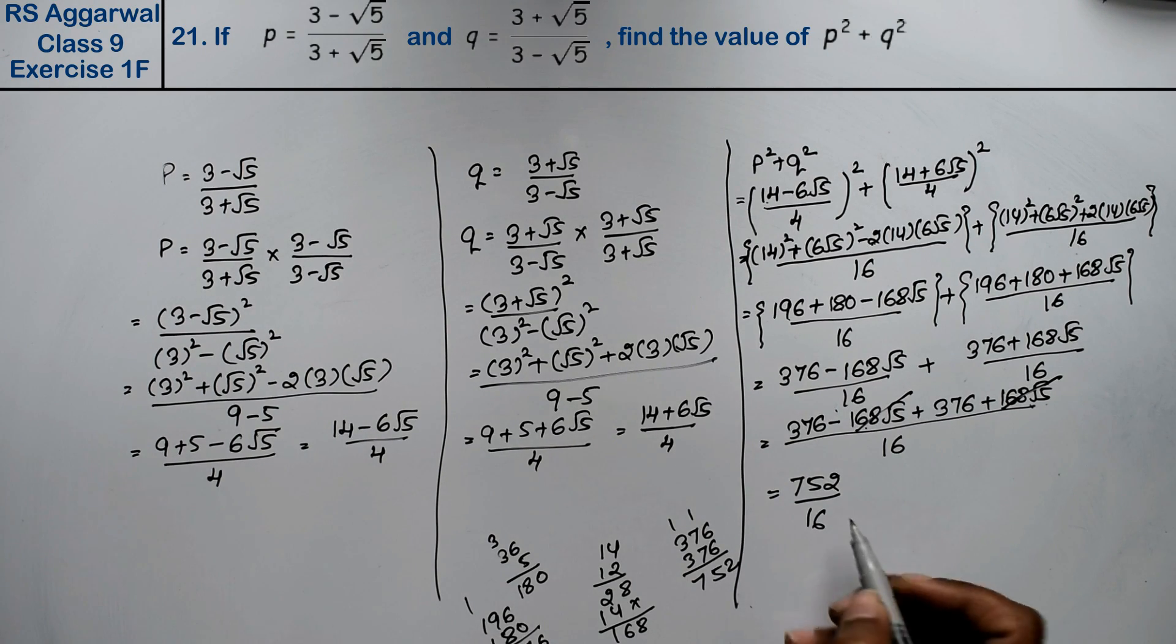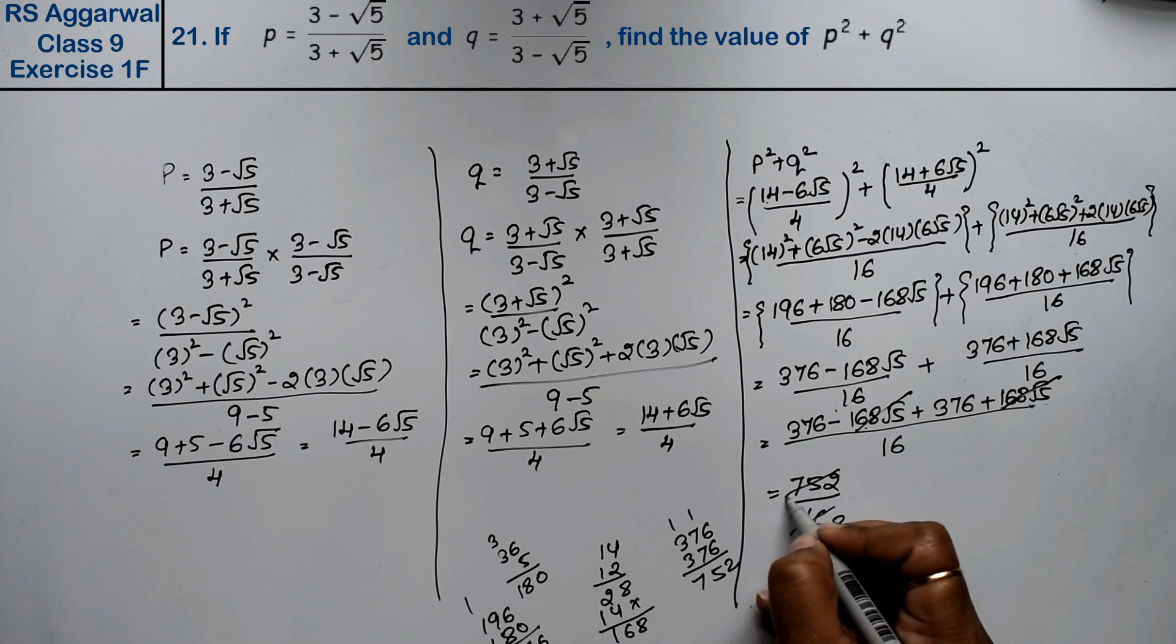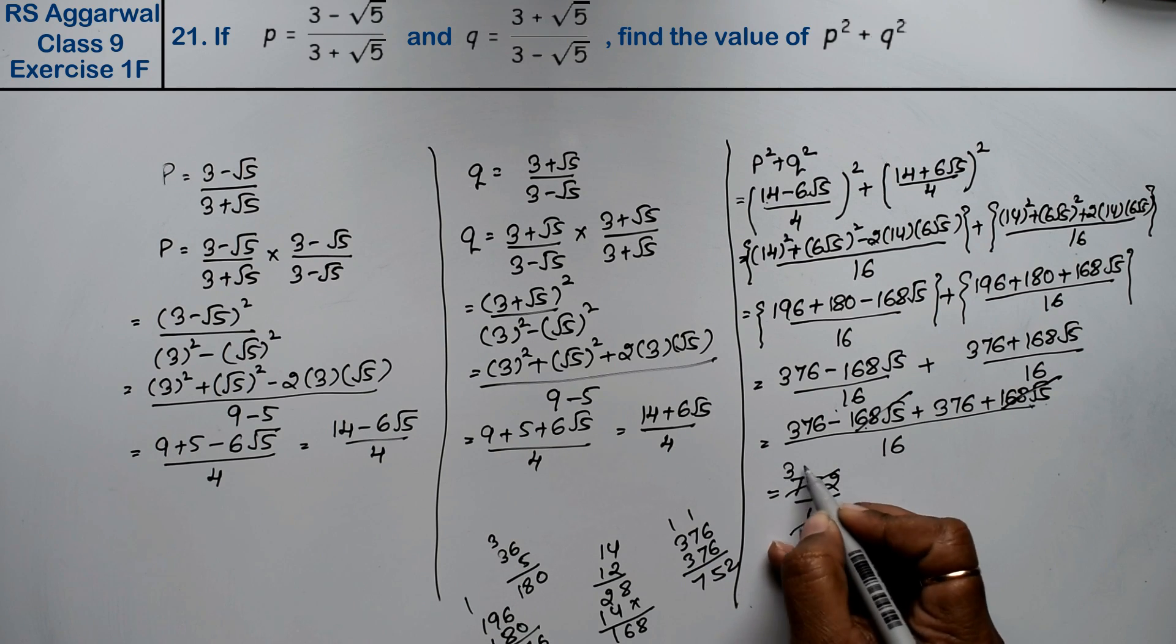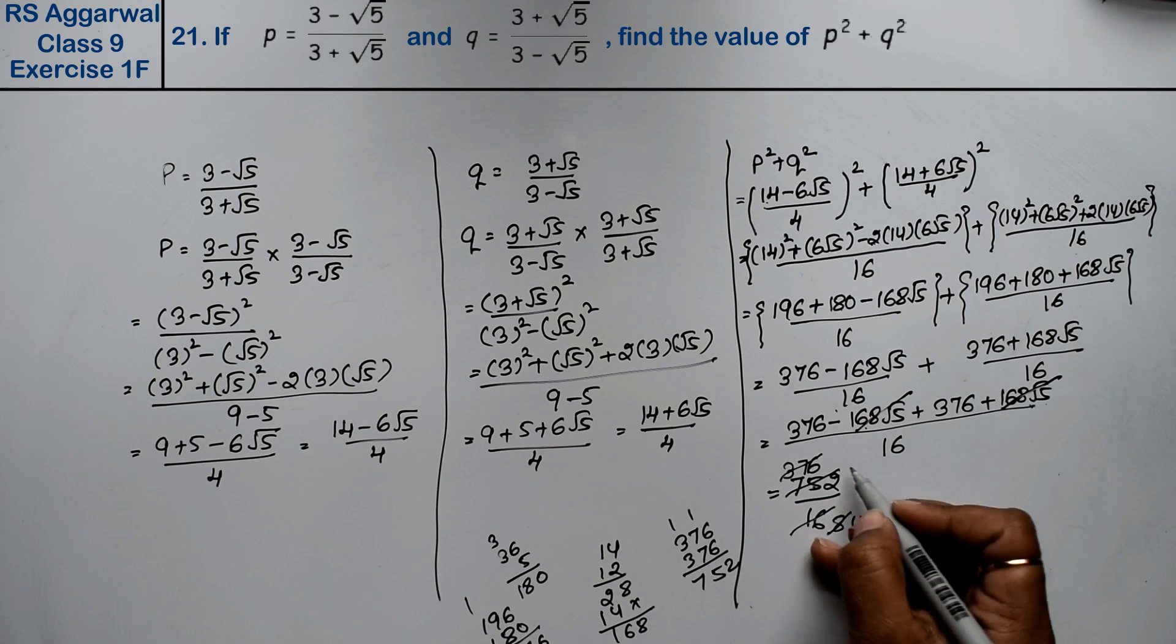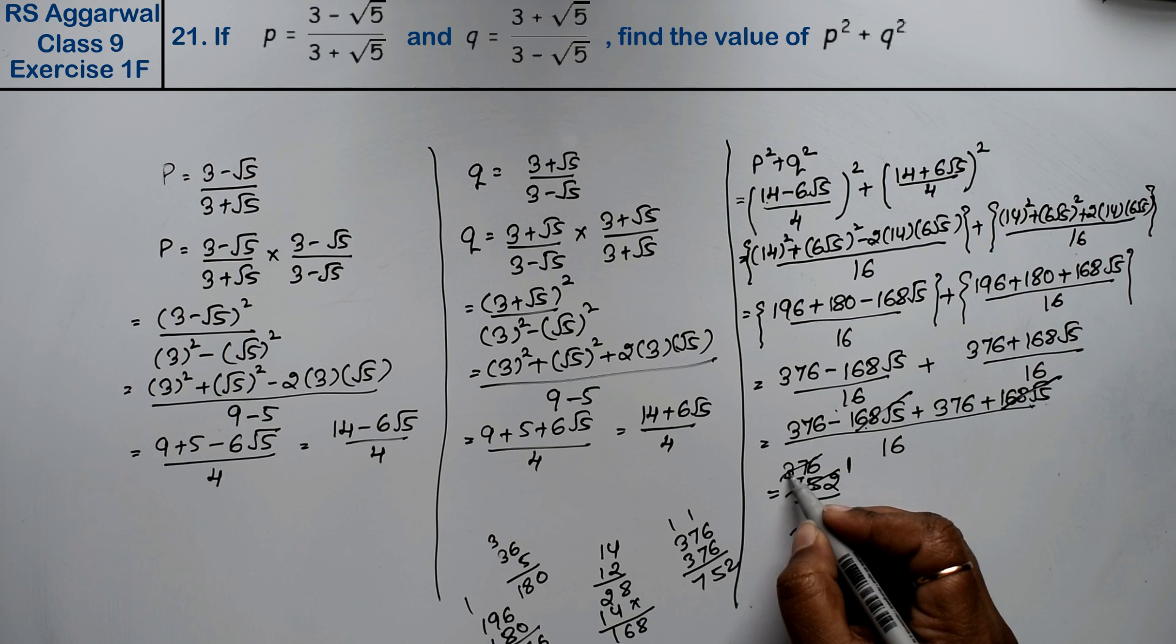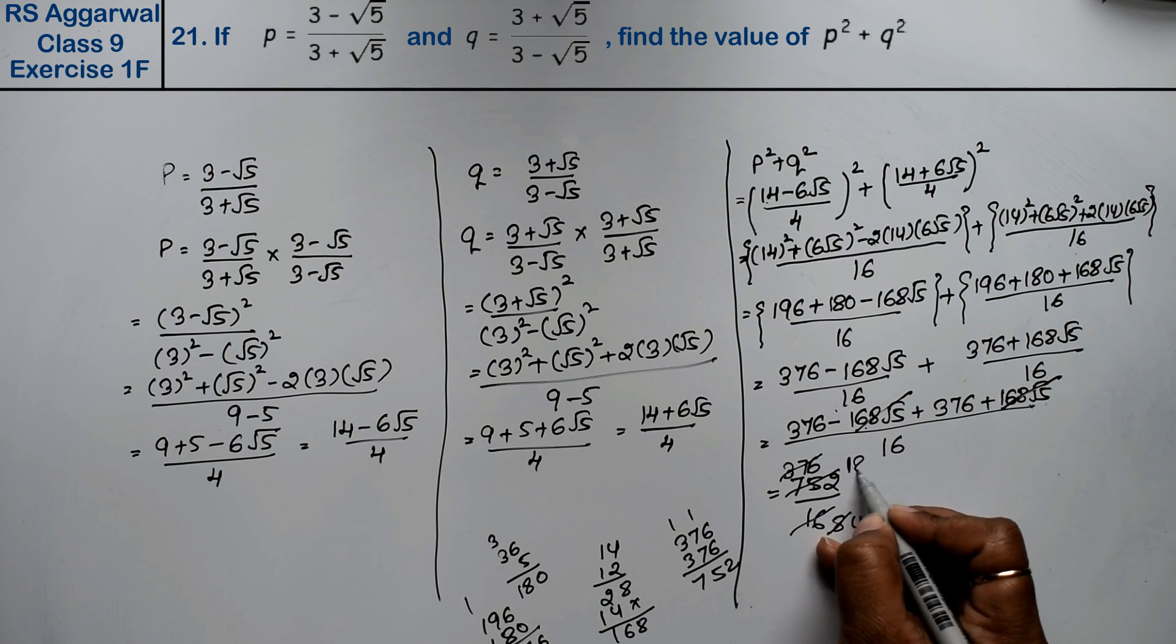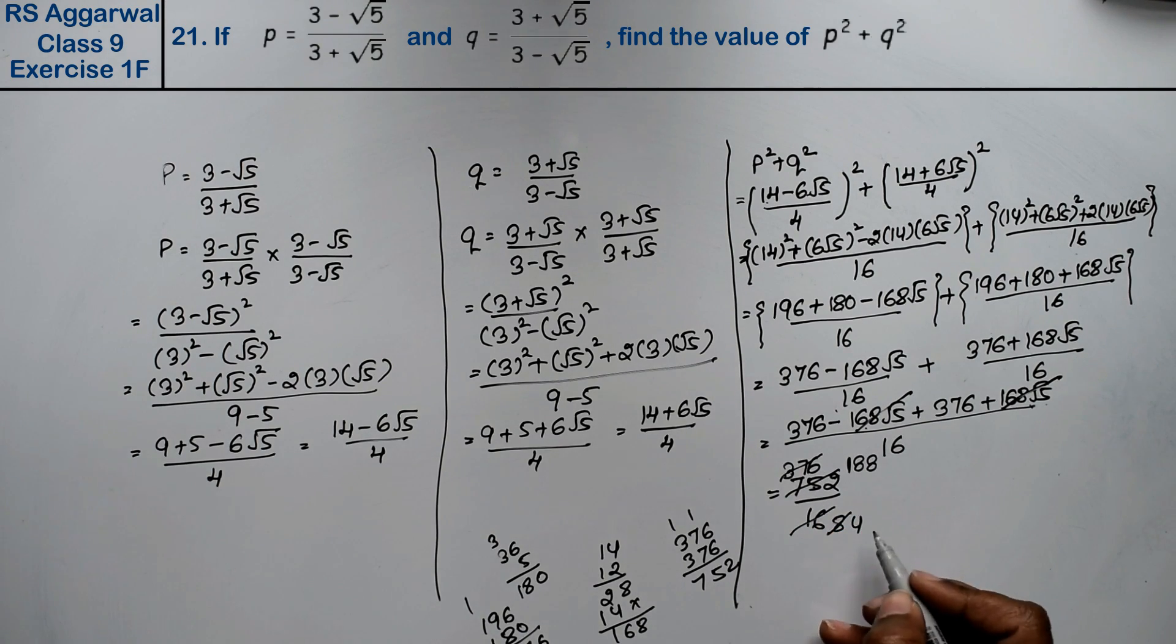Now we will reduce this. Dividing by 2: 2 eights are 16, 2 threes are 6, 2 sevens are 14, 2 sixes are 12. Again dividing by 2: 2 fours are 8, 2 ones are 2. And 2 eights are 16.